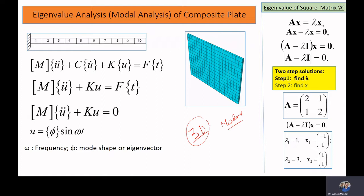Mode shapes are basically our eigenvectors. An eigenvector is a special vector — when it operates on a matrix, it gives the same eigenvector multiplied by some constant. This constant is known as the eigenvalue.